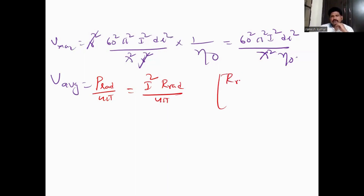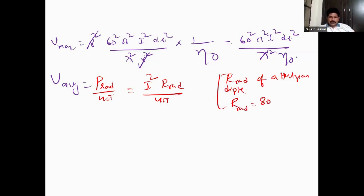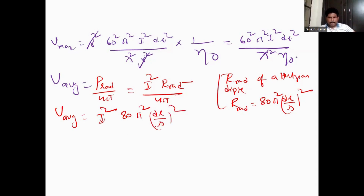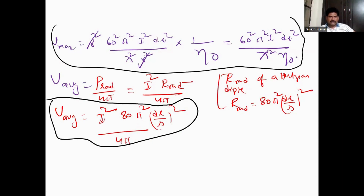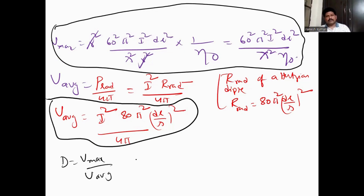So u_max equals r² times (60π)² times I² times dl² divided by λ² times r² times 1/η₀, which simplifies to (60π)² times I² times dl² divided by λ² times η₀. The radiation resistance of a Hertzian dipole is equal to 80π² times (dl/λ)². After substituting u_max and u_average and cancelling common terms, we get the directivity D equal to 3/2.